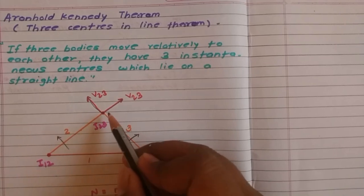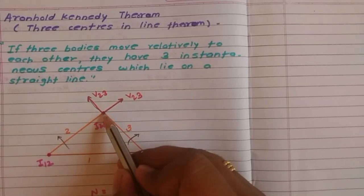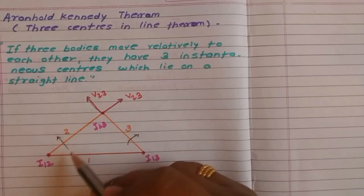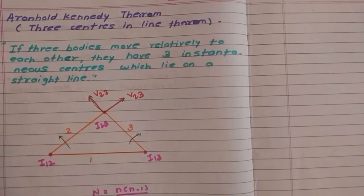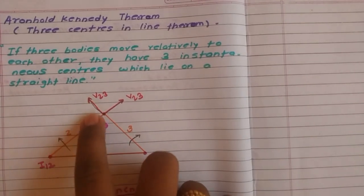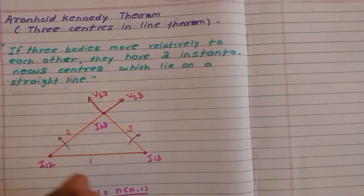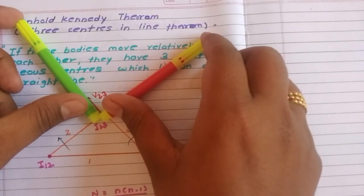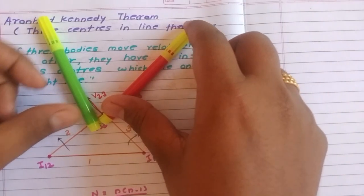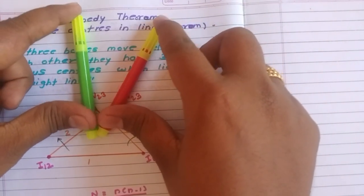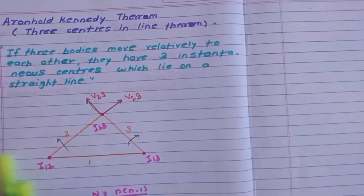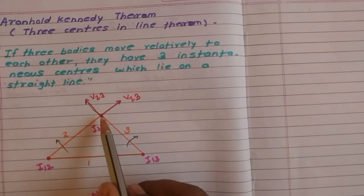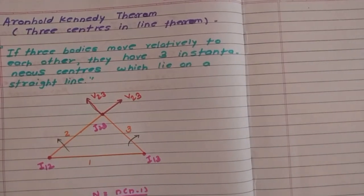It is a property of instantaneous center that velocity at any instantaneous center is same whether it is lying on any of the link. But here what is happening? Velocities are in different directions, so this is not possible. When you will come close to the I12-I13 line, then it will become a single velocity. This point should be on the I12-I13 line to have the same velocity at this point.